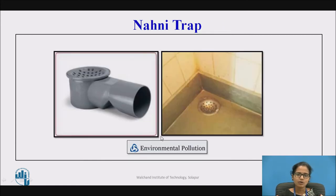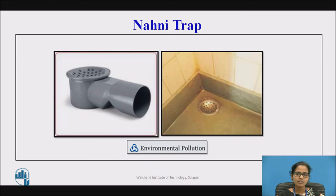The nahani trap, also called the floor trap, is used to admit sludge coming from the floors of rooms, kitchens, bathrooms, etc. It is made up of stainless steel, and galvanized gratings are provided at its top to prevent large materials from entering into the drainage system, which also reduces the chances of blockage.